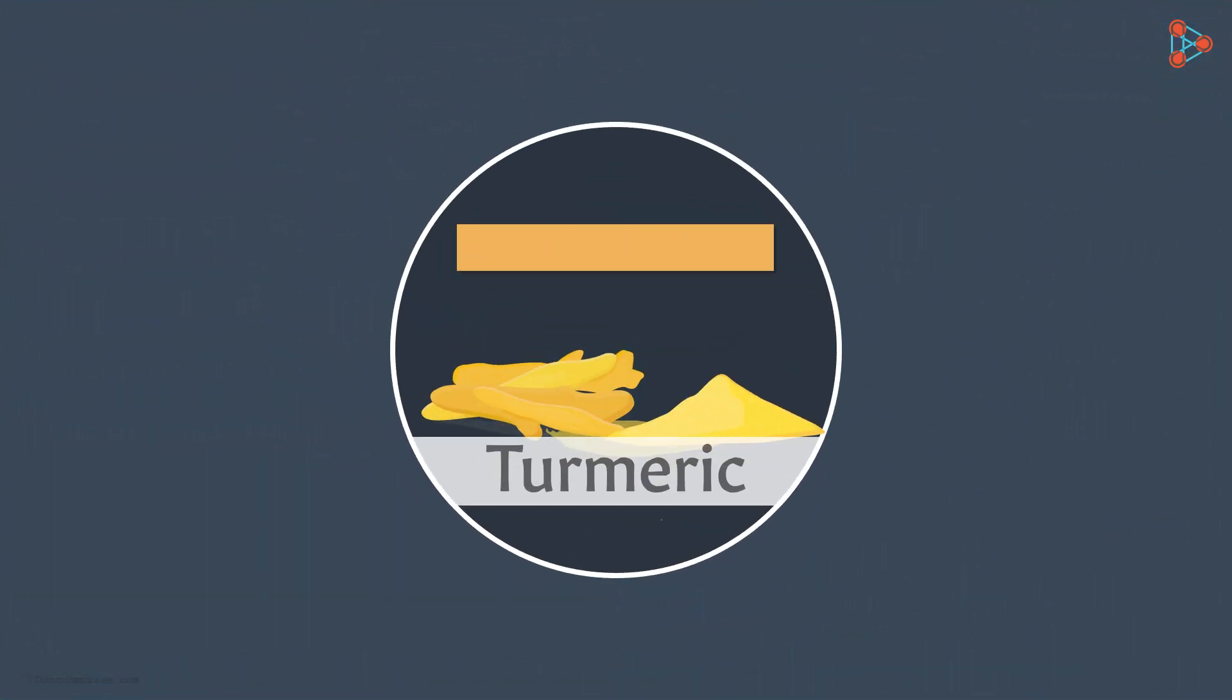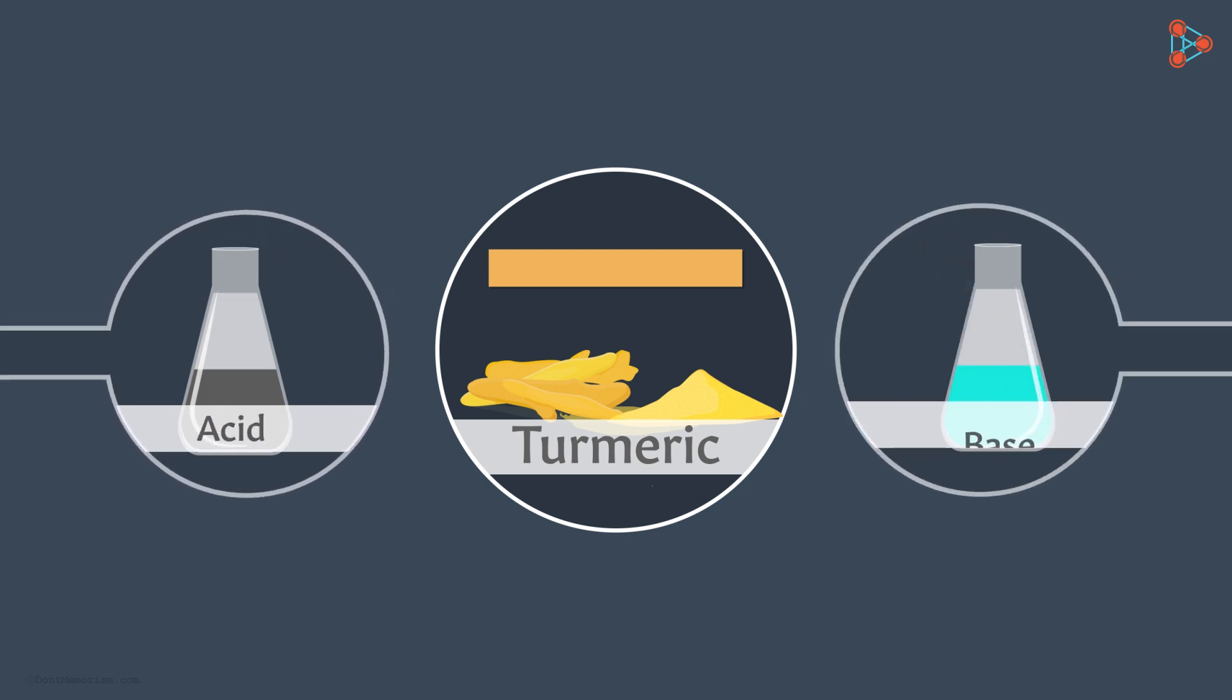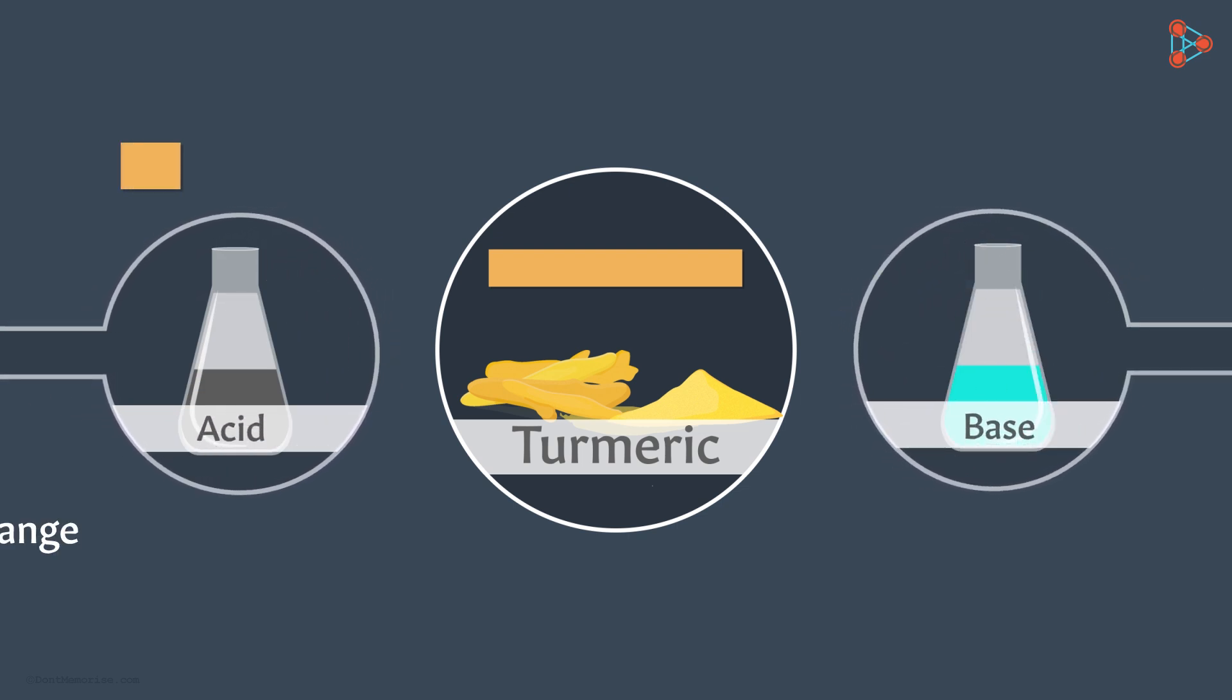That is how turmeric helps differentiate between acids and bases. Acids remain unaffected while basic solutions turn red.